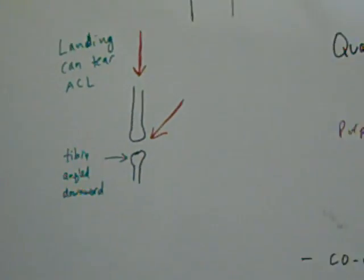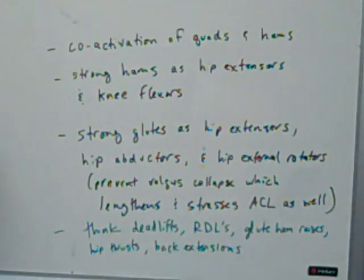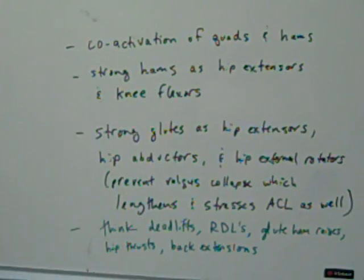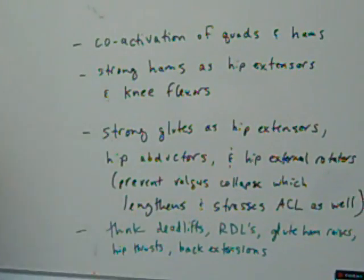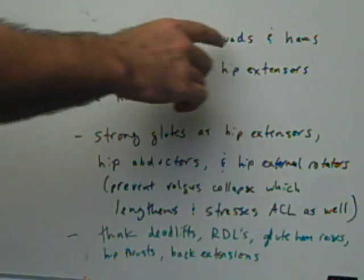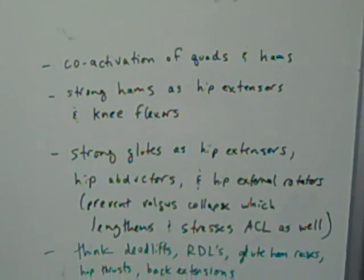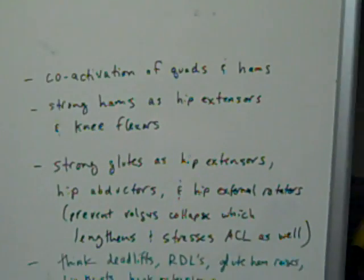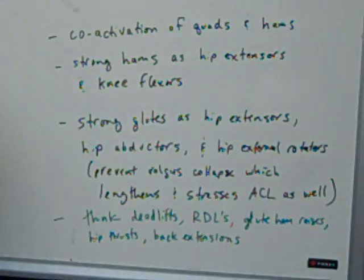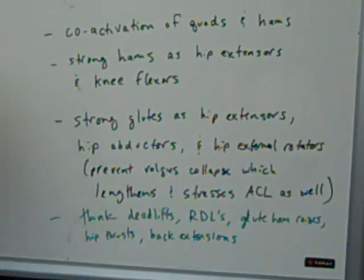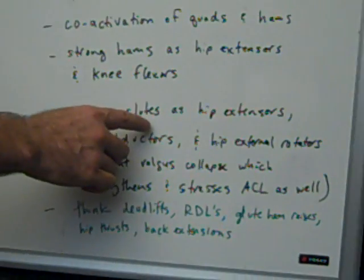So basically, what does all this mean? You want co-activation of the quads and hamstrings. There's some research that shows that women don't have as good of co-activation as men. Their hamstrings are a little bit delayed. But you want to try and get those hamstrings to co-activate and to get strong. You want strong hamstrings as both hip extensors and knee flexors. So you don't just want to train one role or the other. You want to train them in both patterns.